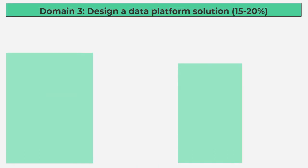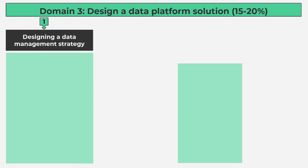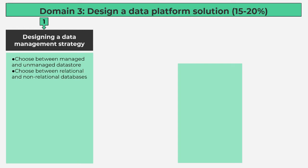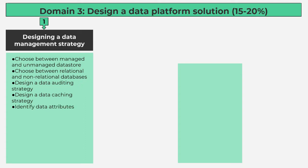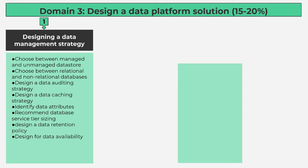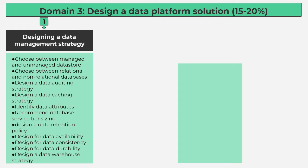Domain 3: Design a Data Platform Solution, 15-20%. Number 1, Designing a Data Management Strategy contains 11 subtopics: choose between managed and unmanaged data store; choose between relational and non-relational databases; design a data auditing strategy; design a data caching strategy; identify data attributes; recommend database service tier sizing; design a data retention policy; design for data availability; design for data consistency; design for data durability; design a data warehouse strategy.